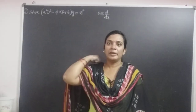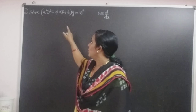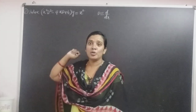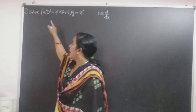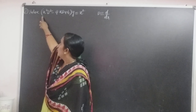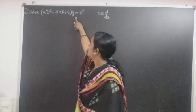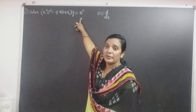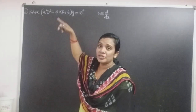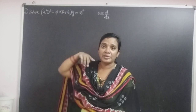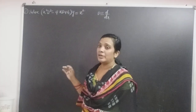Good morning everyone. I would like to discuss a problem on Cauchy's homogeneous linear differential equation. The problem is x squared D squared minus 4x D plus 6 into y equal to x squared. This is clearly expressed in Cauchy's homogeneous linear differential equation.